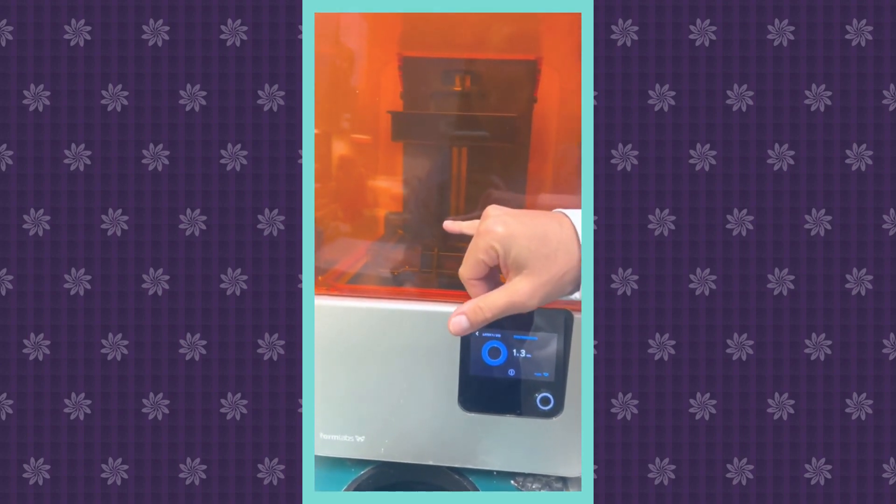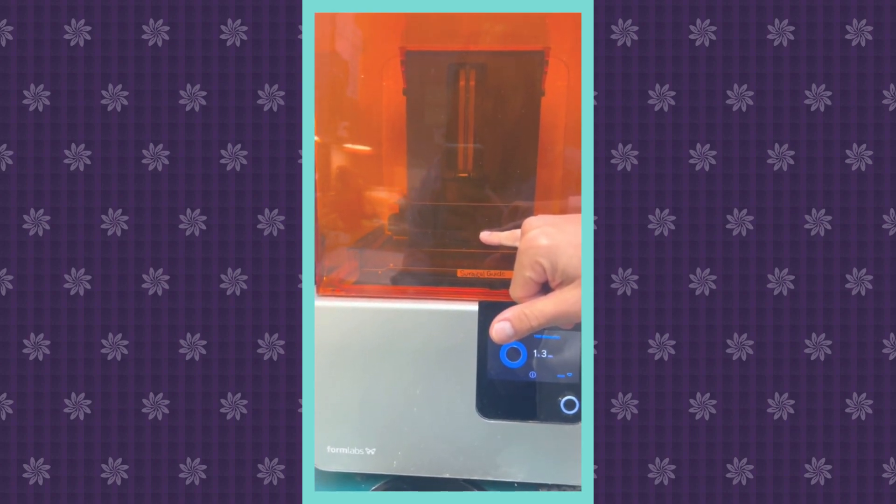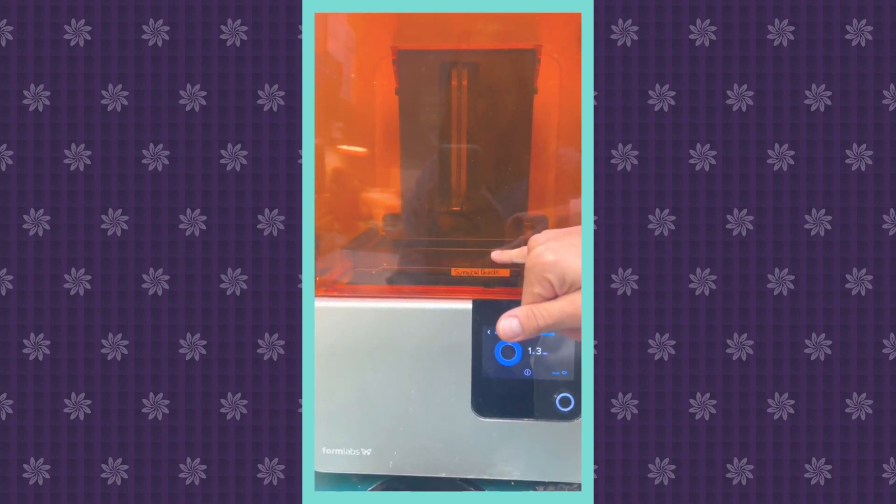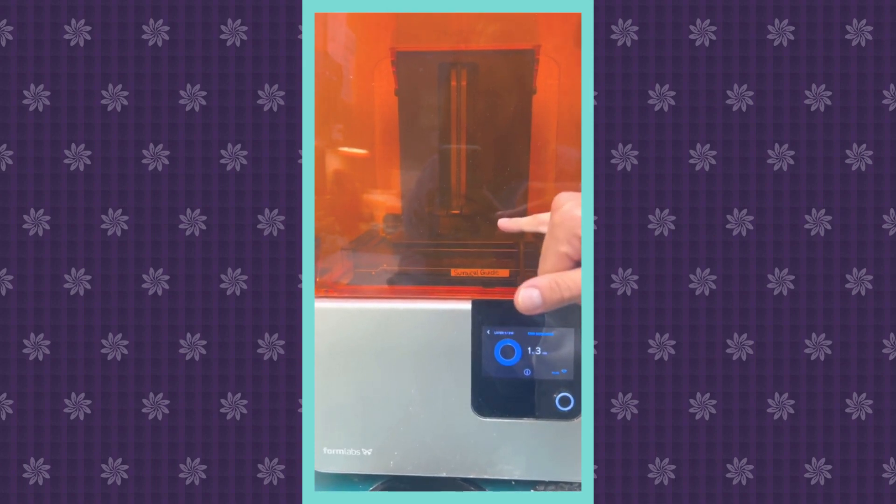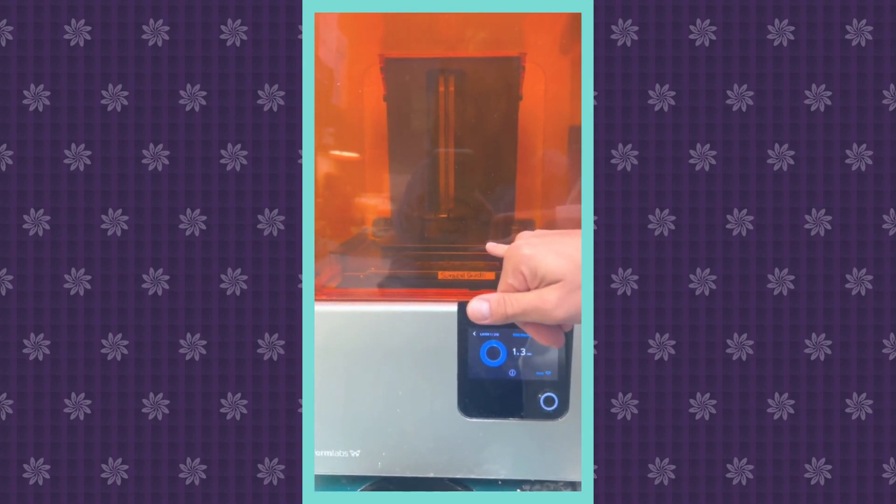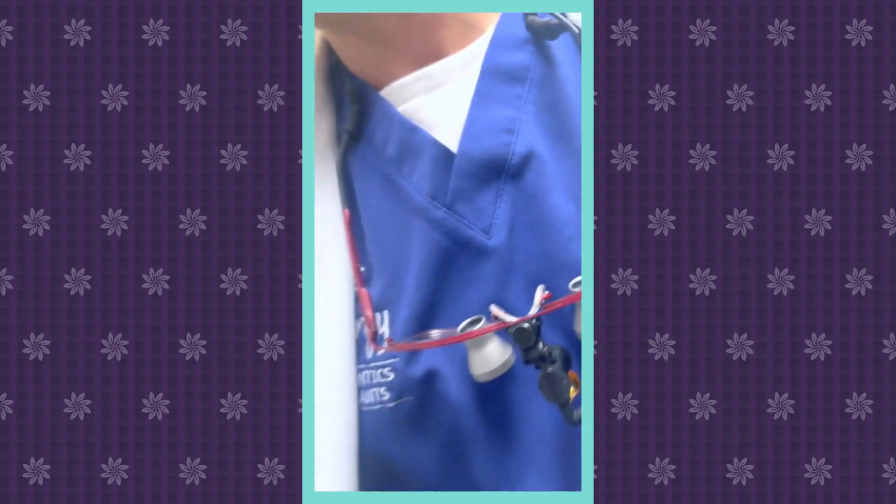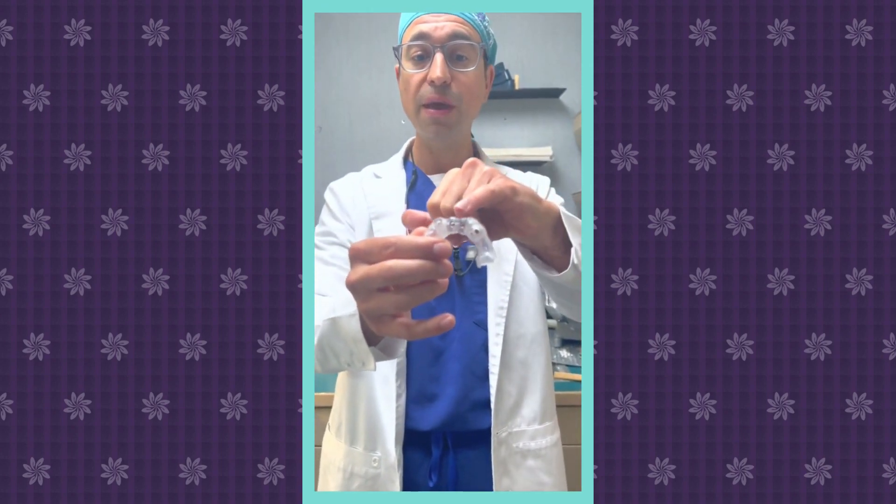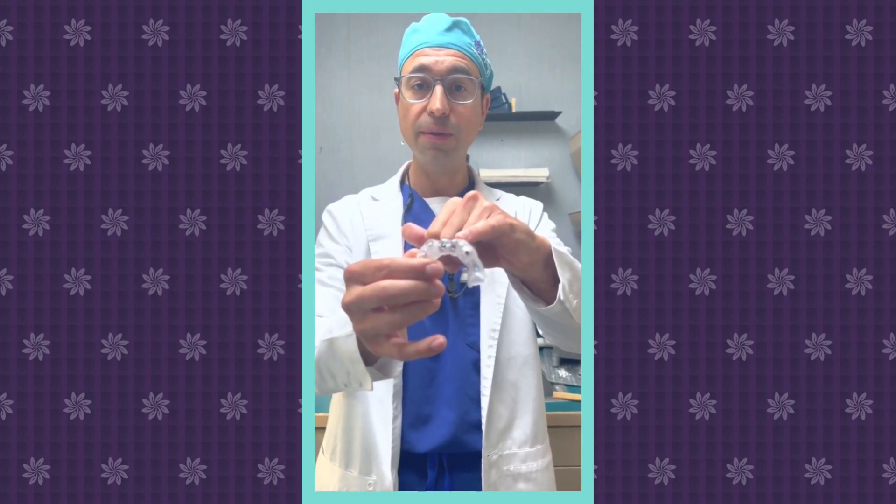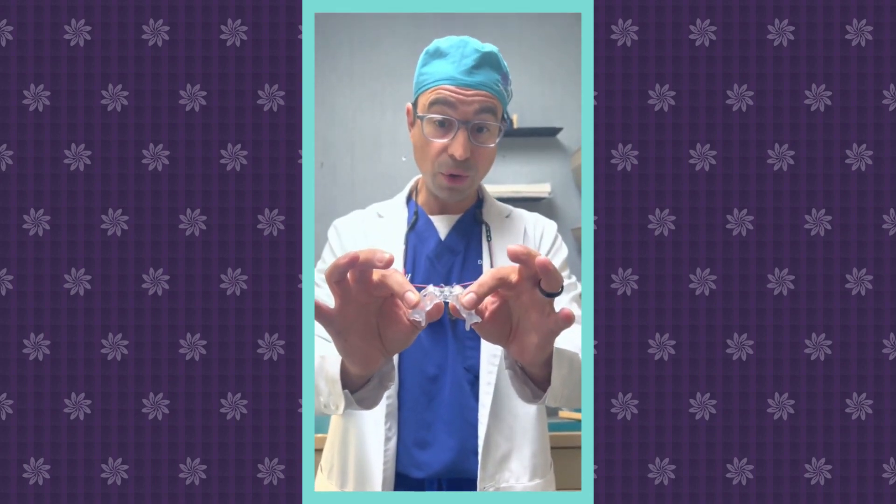Now our 3D printer basically makes the surgical guide that I showed you out of resin, and it's going to start printing the 3D guide right now, which I'm going to utilize during surgery after we disinfect it. And the 3D guide is going to look kind of like this, similar to this. So the implants will be placed exactly where they need to be. And that is how we are accountable for perfect results every time.